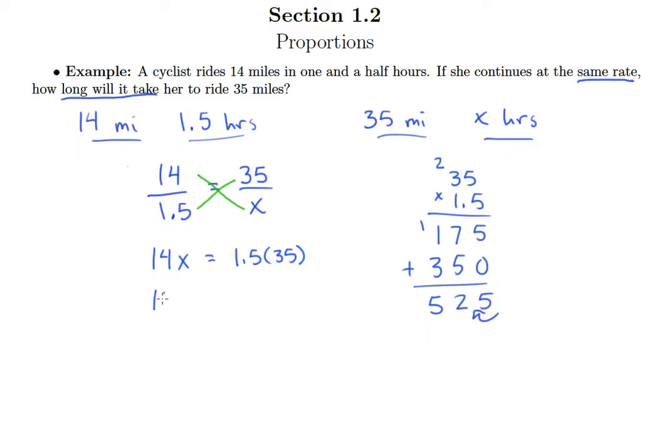So 14x equals 52.5. And then we know the last algebraic step here, since I'm multiplying x by a whole number, what I'm just going to do is simply divide both sides by 14. And again, I'll have scratch work to do here. But we'll do that away from the main body of our work.